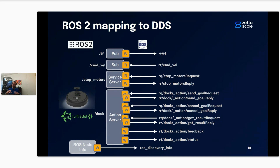What is published in ROS discovery info is a mapping between the ROS nodes and the writers and readers they declare. The construction of the ROS graph depends on both the DDS discovery protocol — all declarations of readers and writers with their QoS — plus this ROS discovery info topic to do the mapping between each node and the readers and writers it declares.